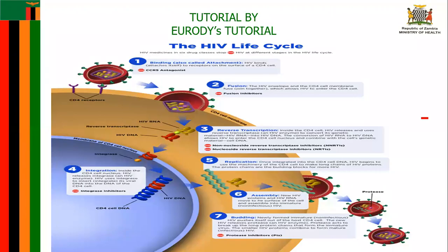I'll talk about the HIV life cycle. HIV as a condition is very easy to understand, and it is also asked in assessments, exams, or licentia exams. But when it comes to the life cycle, you need to understand it because it's a bit hard and you need to explain the seven steps. I'll start with step one.